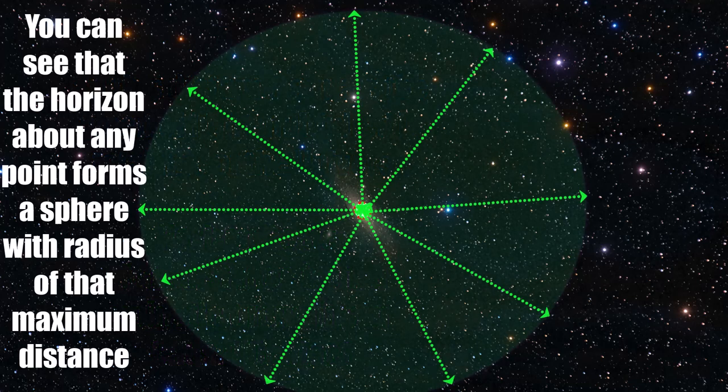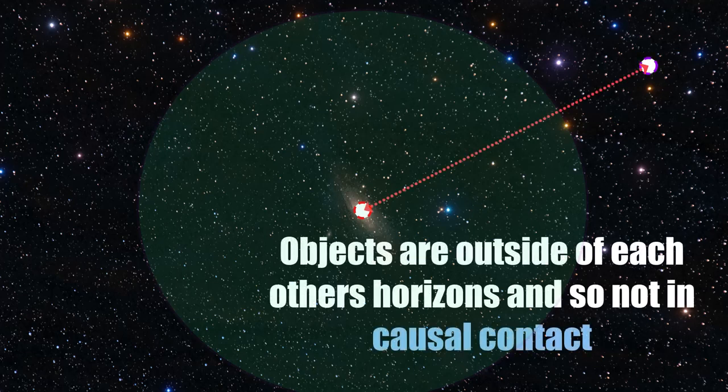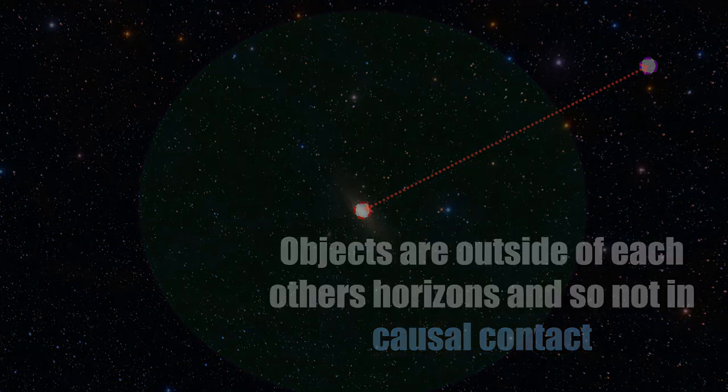Objects which are physically separated by more than that distance apart could not have interacted with each other, since there has not been enough time since the beginning of the universe for a photon of light to have travelled from one to the other, and hence no way that any other particle or entity could have done so either. Therefore, these two objects lie outside of each other's horizons and could not have physically affected each other. Scientifically, we call this relationship as not being in causal contact, since an event in one location cannot cause an effect in the other.